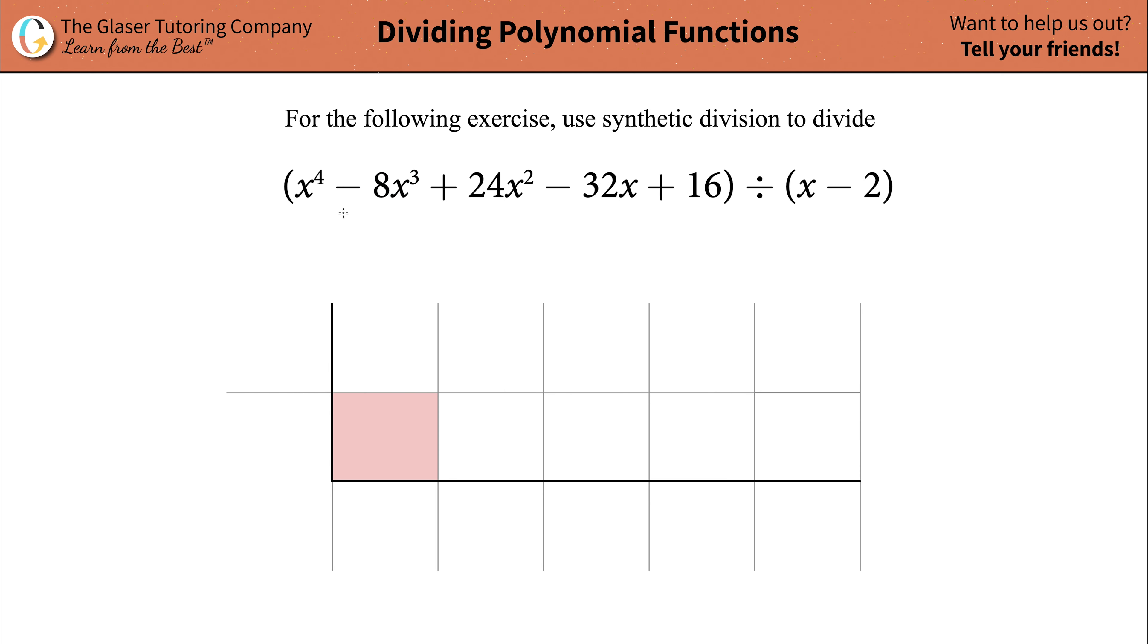In this case, the problem is just like this. So now, in decreasing order, you're going to put in the coefficients. The coefficient of your x to the fourth term is 1. Coefficient of the x cubed term is negative 8—you've got to take into account those signs. x squared term is 24, x term is negative 32, and the constant term is 16. Great, that's all done with the dividend.